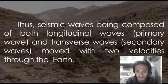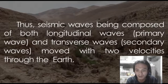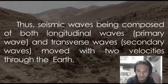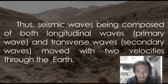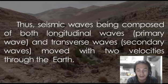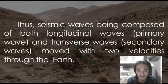Thus, seismic waves — being composed of both longitudinal waves, which are the P or primary waves, and transverse waves, which are the S or secondary waves — move with two velocities through the Earth.